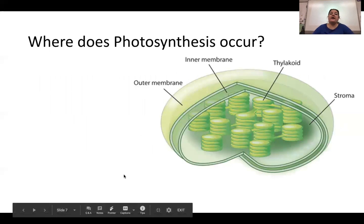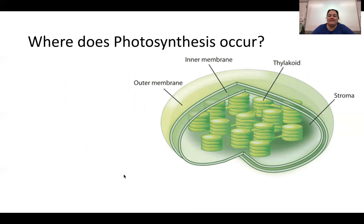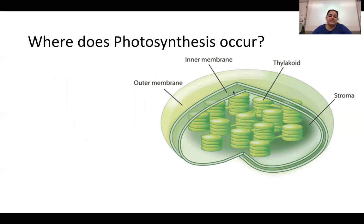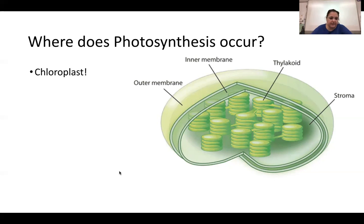Where does photosynthesis occur? In the chloroplast. Chloroplasts are green oval structures with hockey-puck-looking stacks inside. There's an outer membrane and an inner membrane — unlike the mitochondria, the inner membrane isn't squiggly. Inside are structures called thylakoids, and the fluid-filled interior — like the matrix in mitochondria — is called the stroma, which contains enzymes for the chemical reactions.